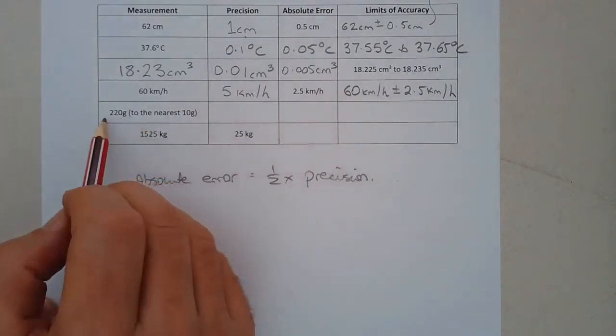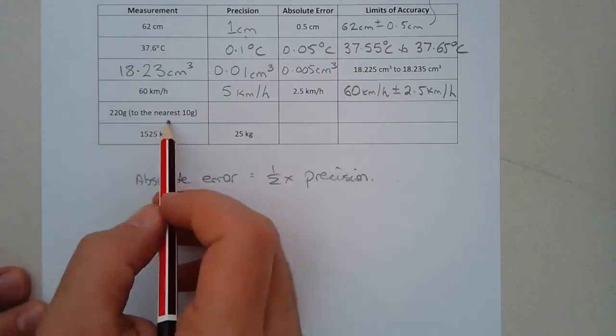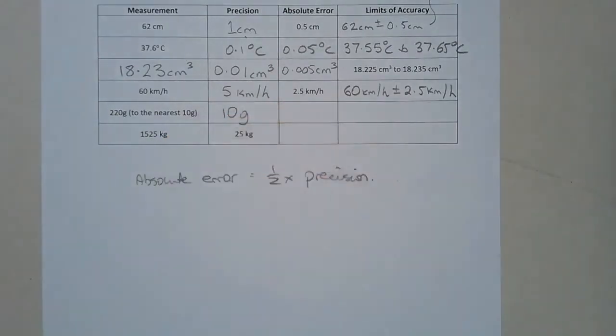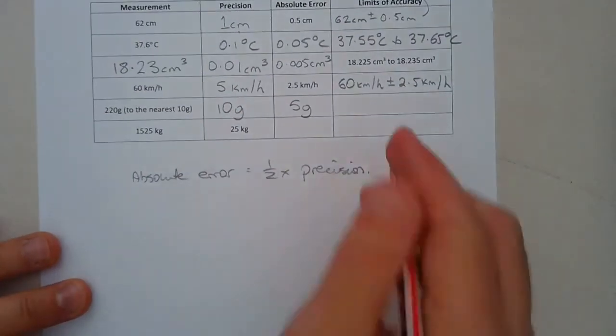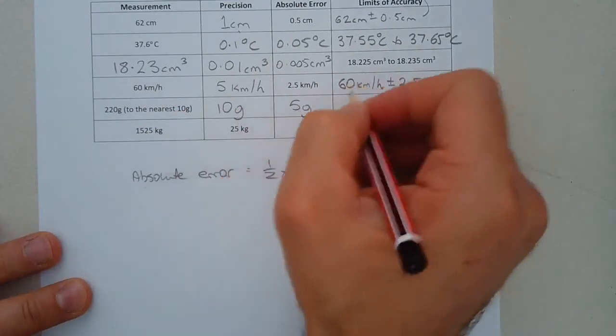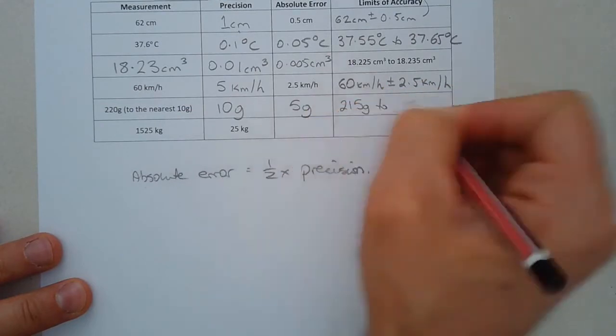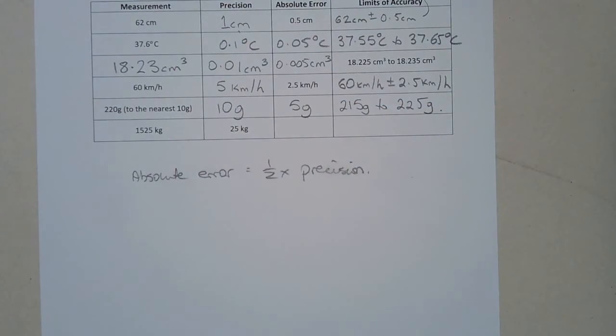Now, this one here. A mass, 220 grams, to the nearest 10 grams. So the precision would be 10 grams, since it seems to be something that's in blocks of 10 grams of the measuring instrument. The absolute error would be 5 grams. And the limit of accuracy, it's going to be 220 grams plus or minus 5 grams. So we could be 215 grams to 225 grams.